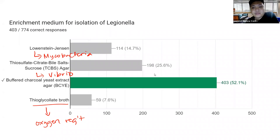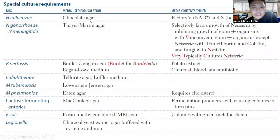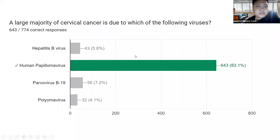We have a table summarizing special culture requirements for various organisms and their culture media. Next question: A large majority of cervical cancer is due to which virus? The answer is human papillomavirus (HPV). Is HPV a DNA or RNA virus? It is actually a DNA virus — in fact, all viruses in our choices here are DNA viruses.